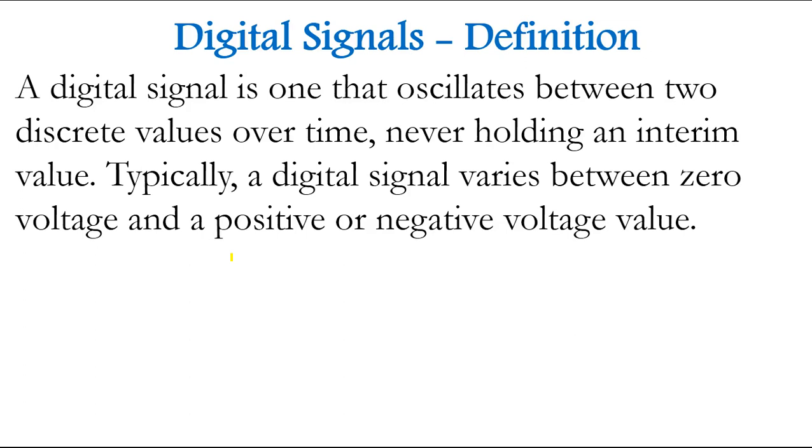A digital signal is one that oscillates between two discrete values over time, never holding an interim value. Typically, a digital signal varies between zero voltage and a positive or negative voltage.